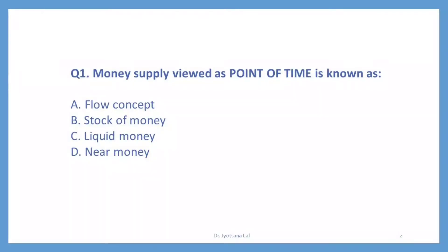The question asks about the concept of money supply at a particular point of time. Money supply at a particular point of time — the correct option is stock of money. So correct option is B.